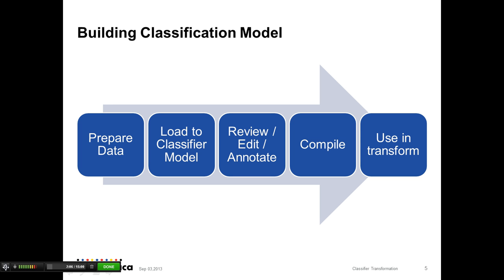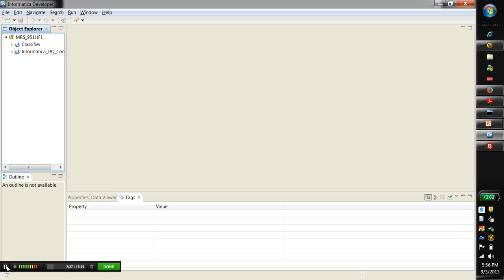This slide shows how to build the classifier model and how to train the model in the transformation. It contains various phases: the first phase is to prepare the data; the next is to load to the classifier model; the third is to review and edit the data; the fourth is to compile the data using both algorithms — Naive Bayes and Maximum Entropy. Once compilation is done, we look at how to use the model in the transformation. We will go through each phase in detail during this demo.